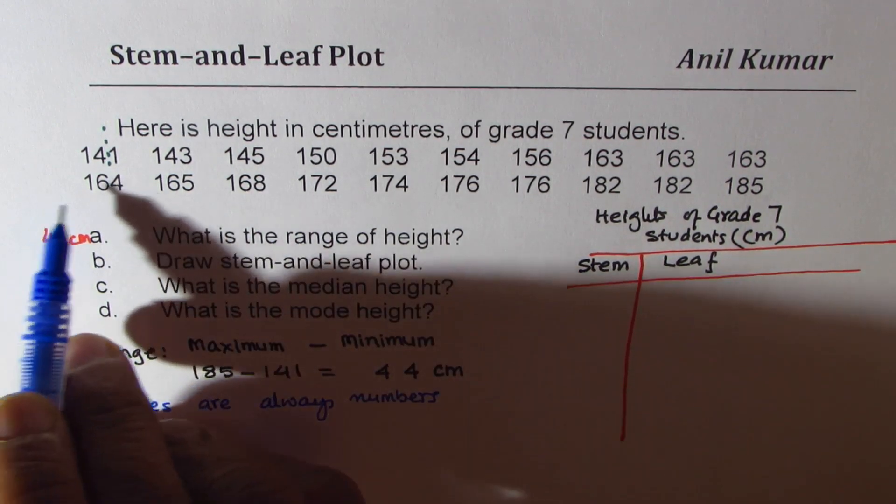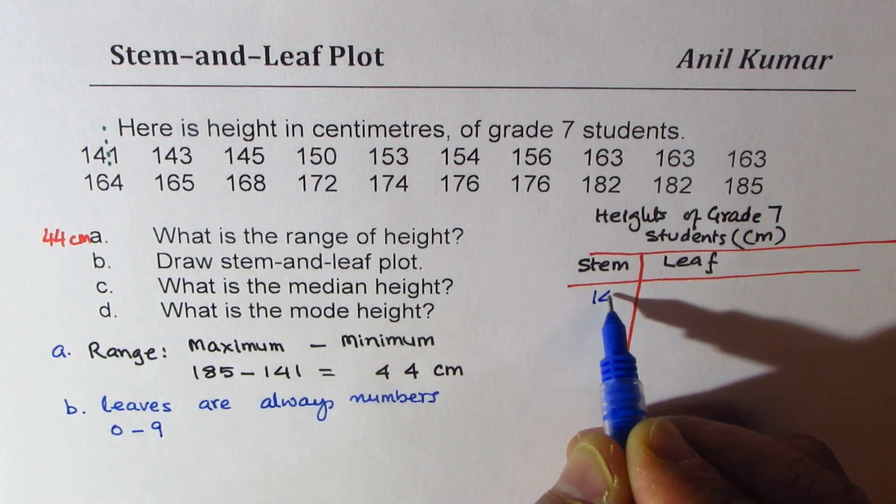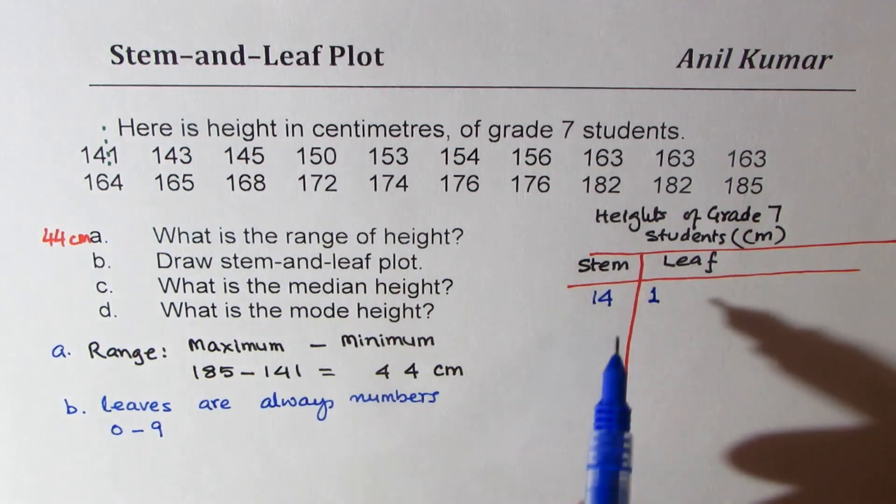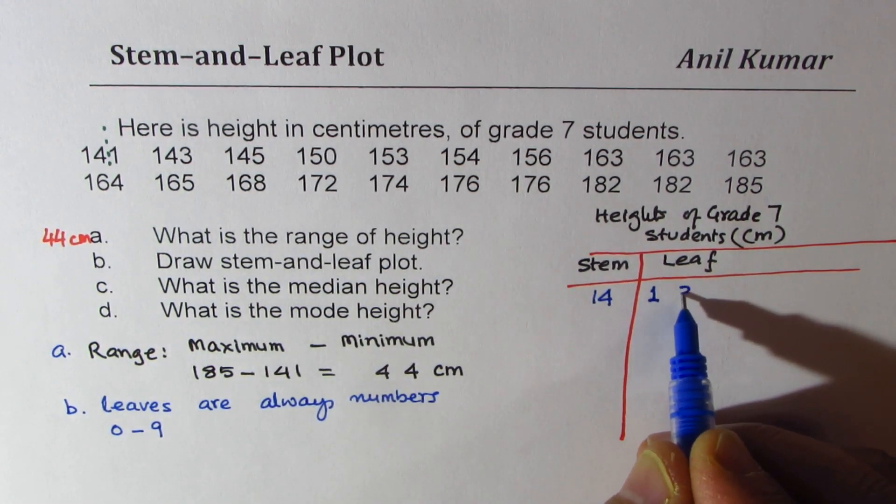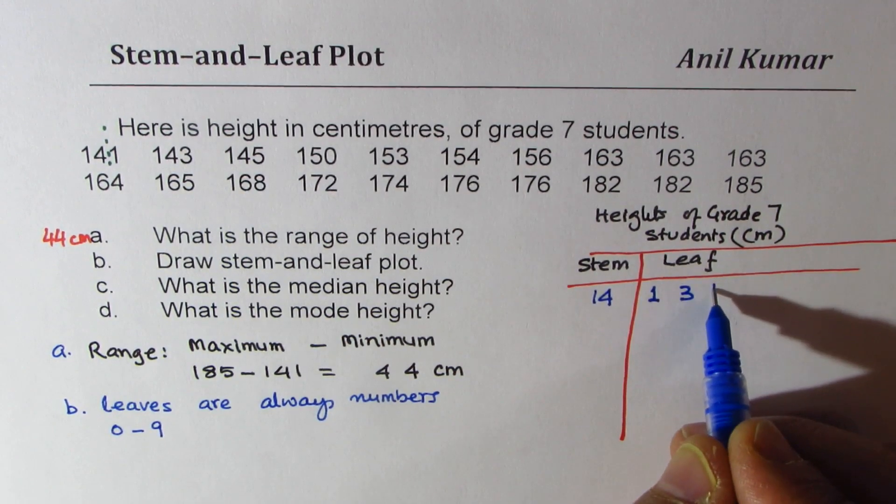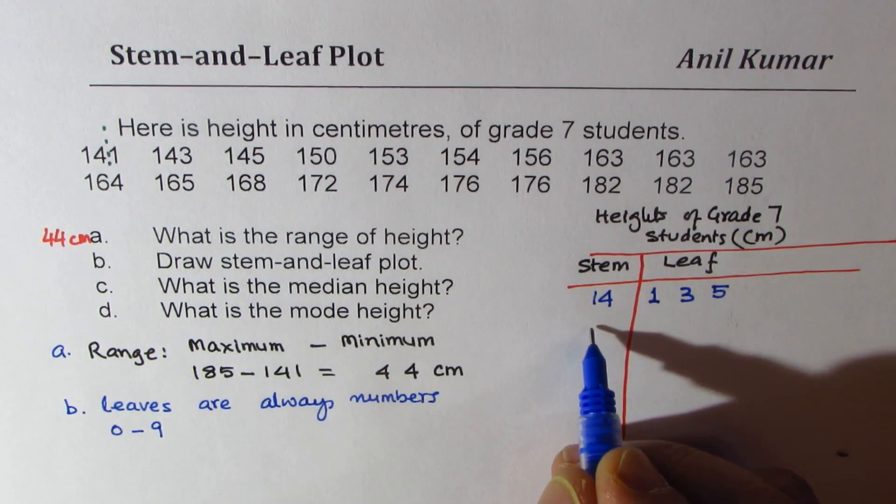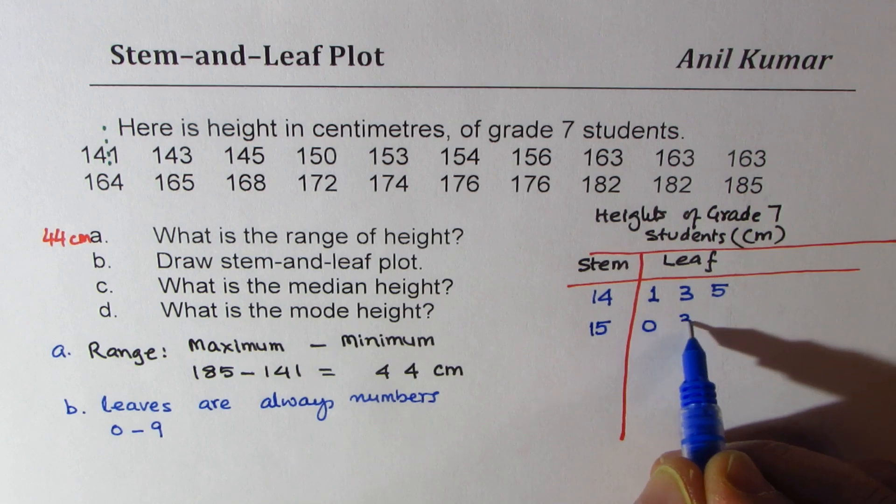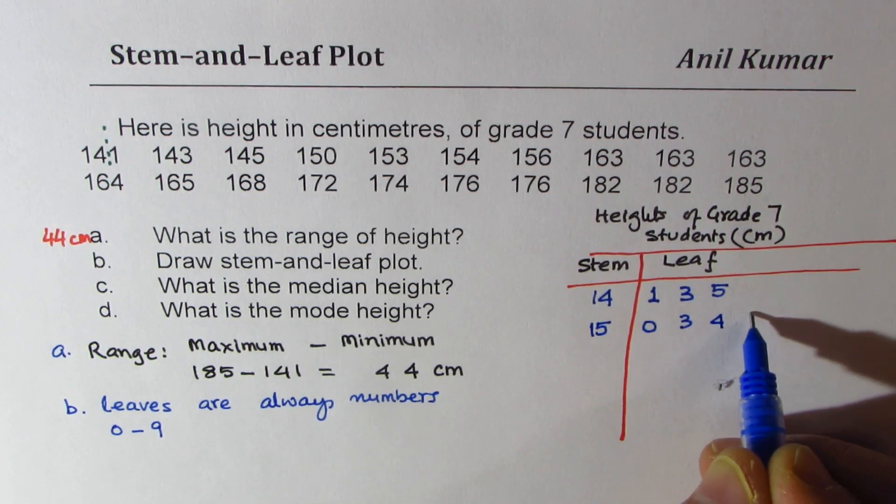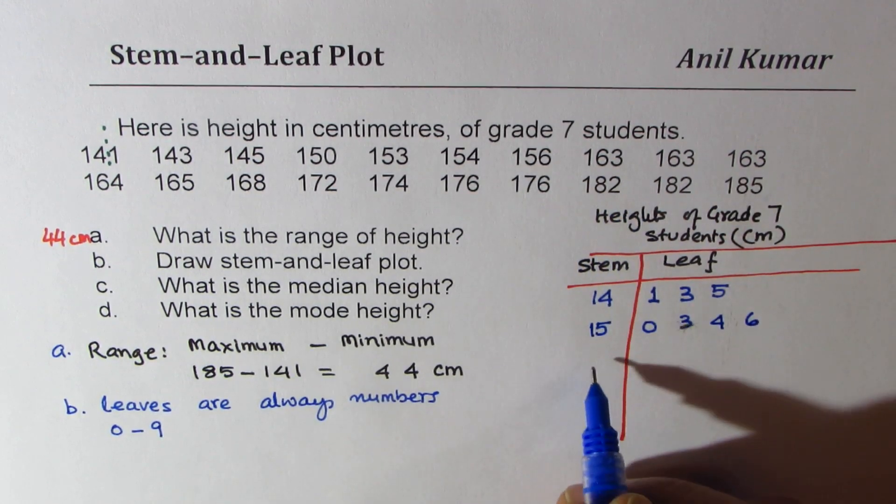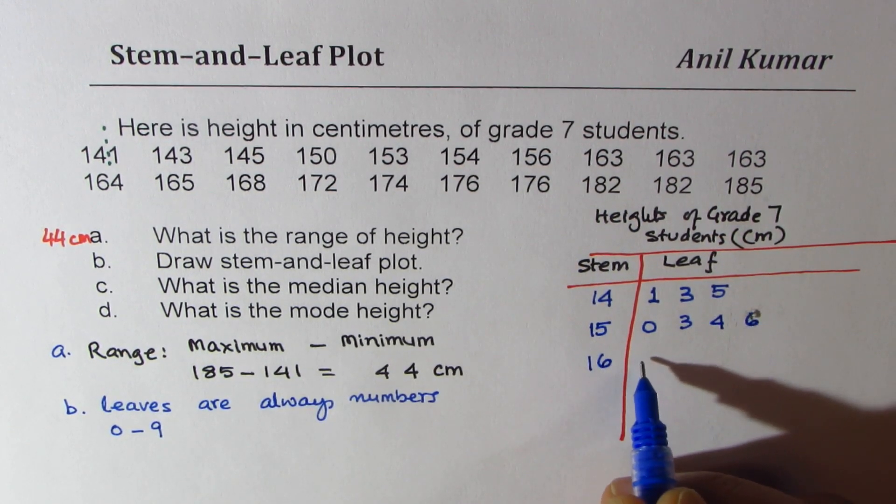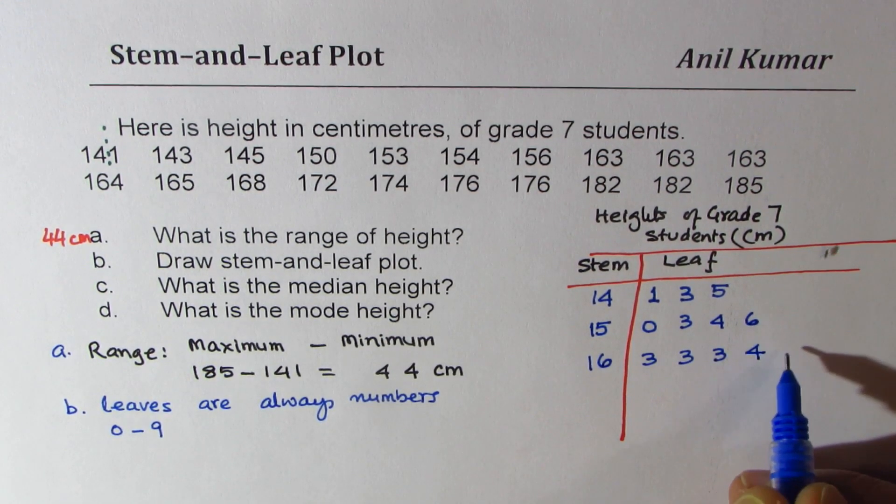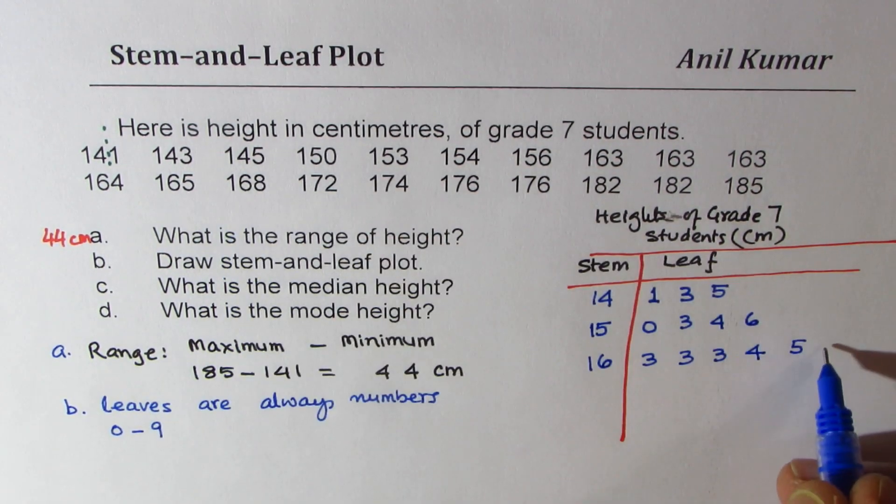The first number here is 141. We'll write 14 in the stem part and that 1 goes to the leaf part. Then we have 143. 14 is already there, so we'll write 3 here. 145, 5. 150, that means next, 15, 0 makes it 150. 153, 154, 156. Then we have 163, 163, 163, 163, 164, and we have 165 also, and then we have 168.